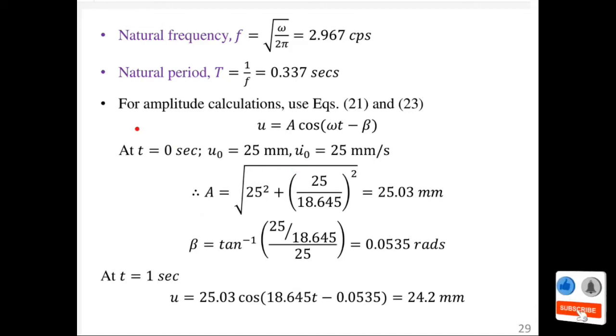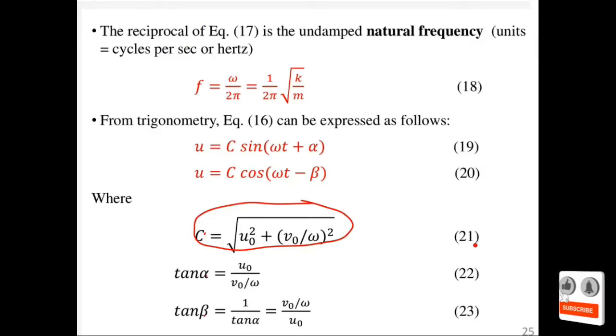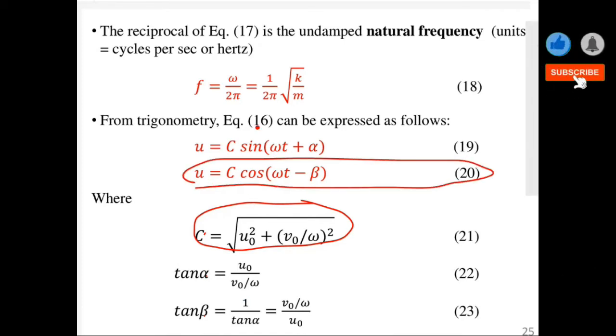Now we want to calculate the amplitude at t equals 1. We are solving the initial value problem using the initial conditions. Remember equations 21 and 23 we gave previously - actually equation 20, not 21 - we are using this.